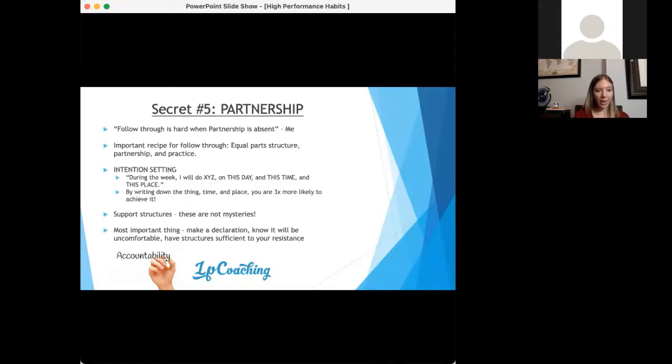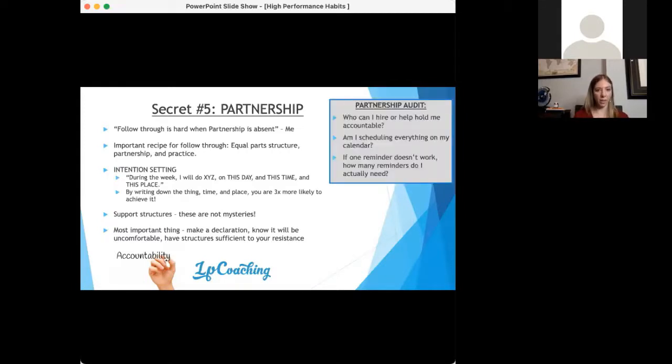By writing it down, you're three times more likely to do it. Support structures are not mysteries. The most important thing is to make a declaration. Know that you will be uncomfortable and have structures and reminders sufficient to your resistance. Some partnership questions: Who can you hire or who can help you hold you accountable? On Point, the whole structure of On Point is meant to be a partnership structure. Are you scheduling everything and adhering to it? And if one reminder doesn't work, how many reminders do you actually need? Do you need six, seven, ten?